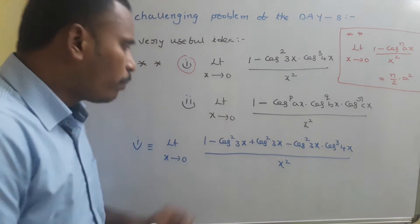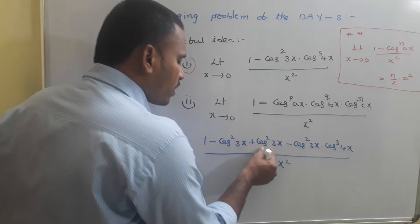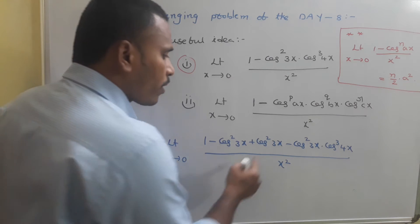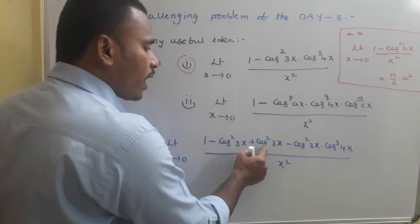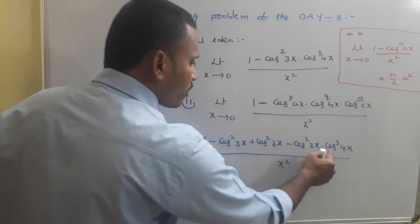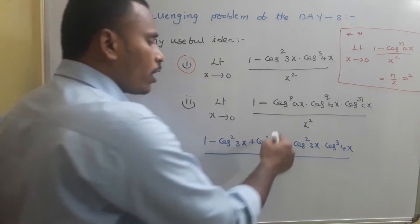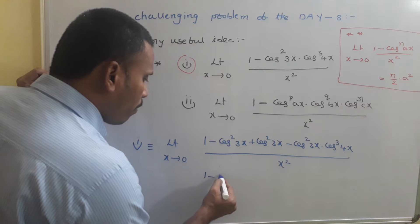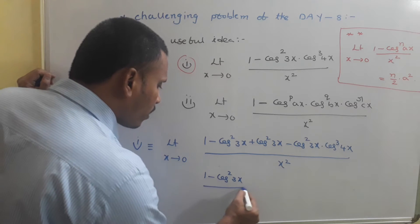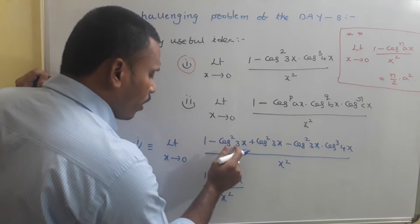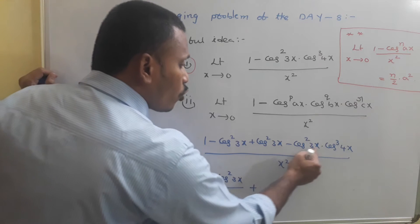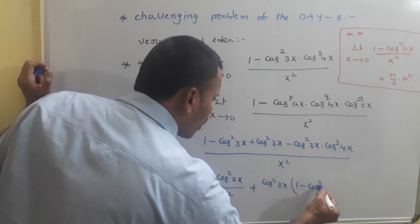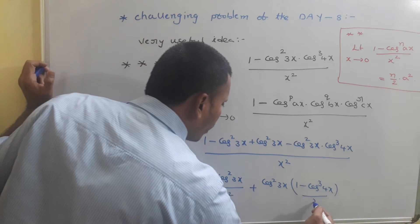For this numerator, I am simply adding cos²(3x) and subtracting cos²(3x). In the next step, the first two terms give (1 - cos²(3x)), and from the remaining two terms, collect cos²(3x) as a common factor, leaving (1 - cos³(4x)). So the expression becomes: (1 - cos²(3x)) / x² + cos²(3x)·(1 - cos³(4x)) / x².